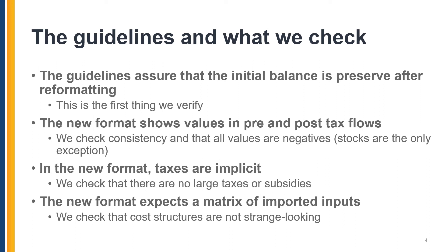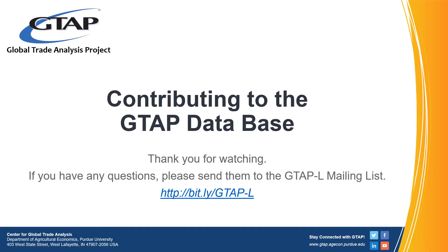If we find something that is oddly large — be that taxes or subsidies — we will get back to you for confirmation that this is in fact what the initial database represents. The new format also expects that you provide us a matrix of imported inputs, and we will be checking cost structures for each industry so that we find nothing that looks a bit strange. We will report all this to you and we will work together in improving the quality of the GTAP database. Thank you.